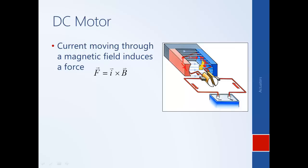A couple of challenges arise. As the forces cause the rotor to flip to the other side, the direction of the current reverses, causing the forces to switch and making the coil want to flip back. Instead of continuous spinning, the alternation of forces would cause the coil to reach some equilibrium where it stands still. This is addressed by switching the direction of current when the coil flips, accomplished with what we call a commutator — broken half-rings such that when the motor coil flips, it connects to the opposite side of the battery.